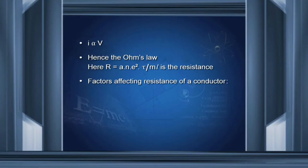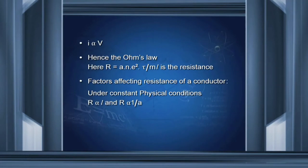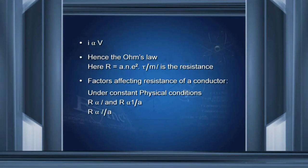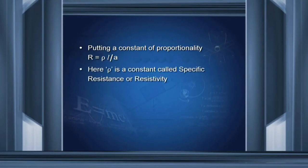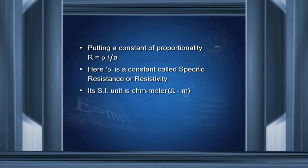Factors affecting the resistance of a conductor: under constant physical conditions, resistance is directly proportional to the length of the conductor and inversely proportional to the area of cross-section. A longer wire has greater resistance; a finer wire also has high resistance. Combining these, R is directly proportional to L/A. Putting a constant of proportionality ρ, we get R = ρL/A. Here ρ is called resistivity or specific resistance. Its SI unit is ohm·meter. From the expression, ρ = m/(ne²τ).